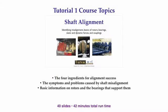The topics in tutorial 1 will cover the four key ingredients you need to successfully align rotating machinery. This tutorial will illustrate all of the symptoms you would likely see on misaligned machinery and the problems misalignment causes. There is some very basic technical information on rotating shafts and the bearings that support them that should be very informative for anyone who is just being introduced to industrial rotating machinery, as well as people who have had several years of experience.